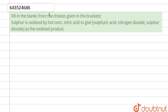Fill in the blanks from the choices given in the bracket: sulfur is oxidized by hot concentrated nitric acid to give sulfuric acid, nitrogen dioxide, or sulfur dioxide as the oxidized product. So here, the reaction when sulfur